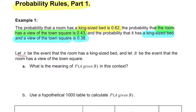Then we're told the definition. We have A is the event that the room has a king-size bed. So A is king-size bed. B is the event that we have a view of the town square. So A is the bed, B is the view.